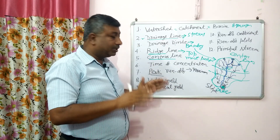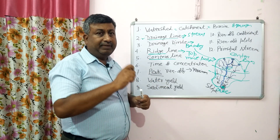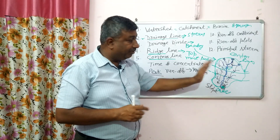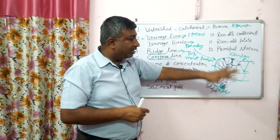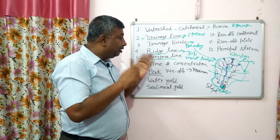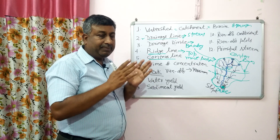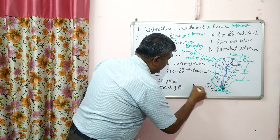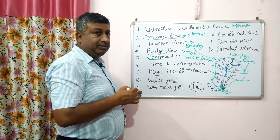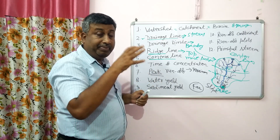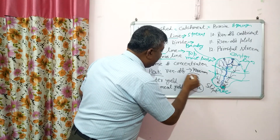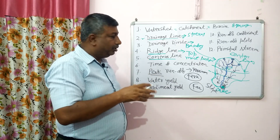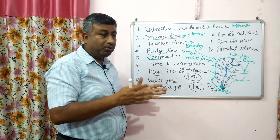Peak runoff occurs when time of concentration is equal to rainfall duration — this is very important. If time of concentration is more, then more time is available for water spreading, infiltration, percolation, etc. In a watershed, more time of concentration is desirable. In a circular or fan-shaped watershed, time of concentration is less, so all points contribute simultaneously, causing a high flood peak. In a fern-shaped or elliptical watershed, time of concentration is more, so flood peak magnitude is lower. Fern-shaped watersheds are desirable because time of concentration is more and flood peak is less.